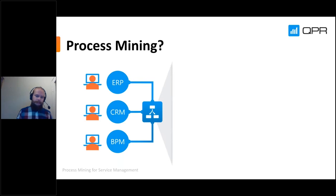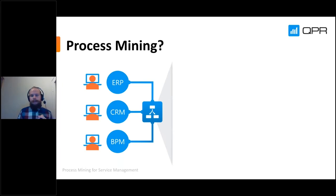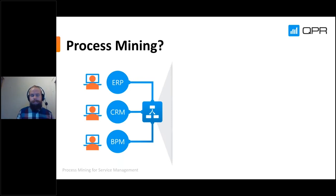Process mining takes raw data from your databases. Every single operation creates data — there is a gazillion bytes of data created every single day. These are activities with their timestamps recorded in our ERP systems, CRM systems, and business process management systems. What process mining does is take this raw data and make an automatic visualization of how the process looks based on actual data and actual timestamps.